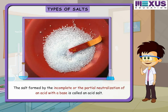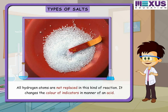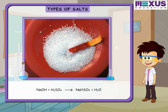The salt formed by the incomplete or partial neutralization of an acid with a base is called an acid salt. All hydrogen atoms are not replaced in this kind of reaction. It changes the color of indicators in the manner of an acid. For example, sodium hydroxide on reaction with sulfuric acid gives sodium bisulfate and water: NaOH + H₂SO₄ → NaHSO₄ + H₂O.